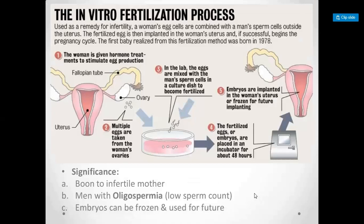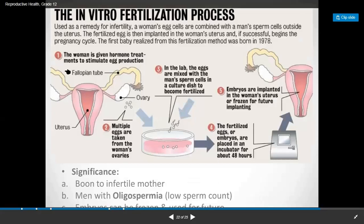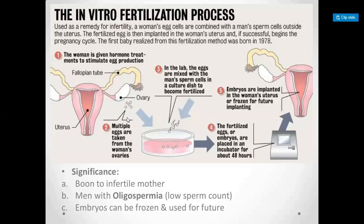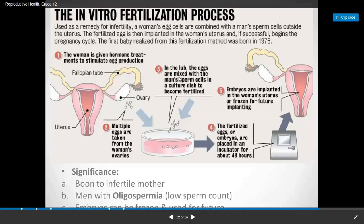So, IVF — In-Vitro Fertilization. The woman is given hormone treatment to stimulate egg production, so multiple eggs are produced. Multiple eggs are collected from the woman's ovaries. After collection, the eggs are mixed with the man's sperm in a culture dish to become fertilized. The fertilized eggs or embryos are then placed in an incubator for around 48 hours.